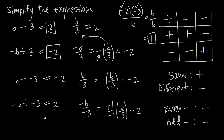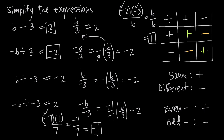What if we have negative 7 times positive 1 divided by positive 7? In this case, we have one negative sign — just the negative 7. That's an odd number of negative signs, so our result should be negative. If we do the arithmetic, negative 7 times 1 is negative 7 in our numerator, and we have 7 in our denominator. Negative 7 divided by 7 is negative 1 — a negative result — because we had an odd number of negative signs.